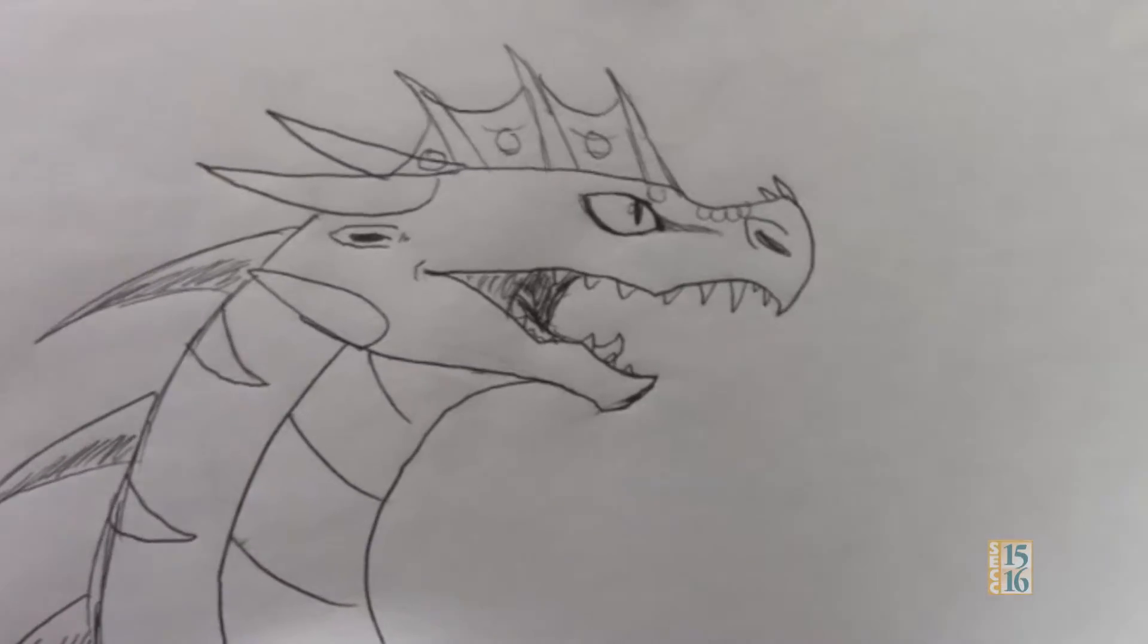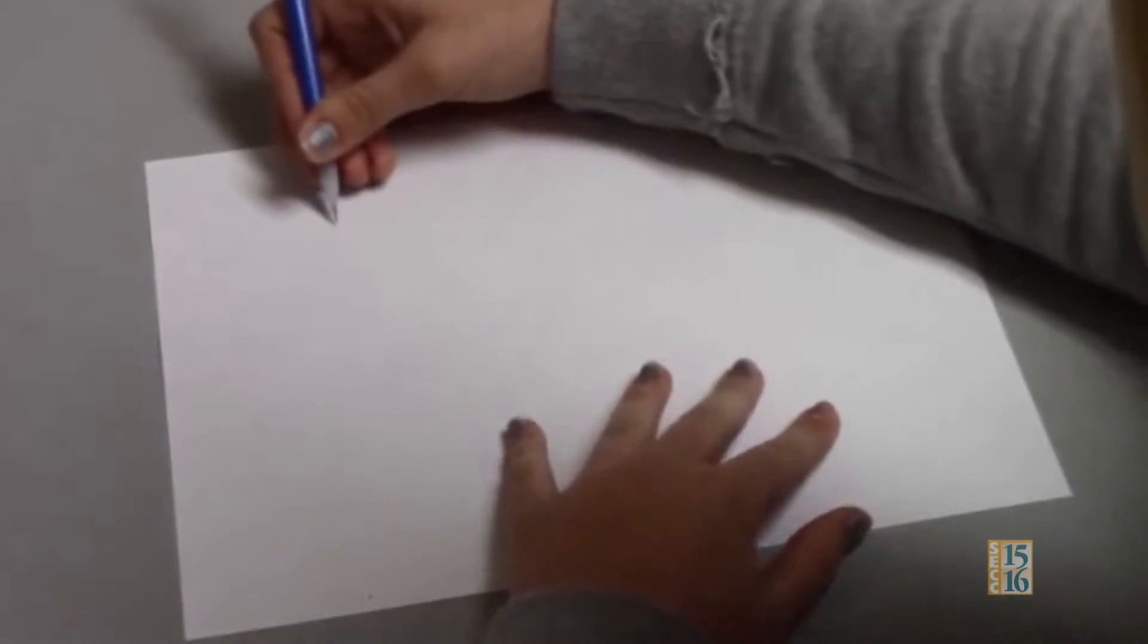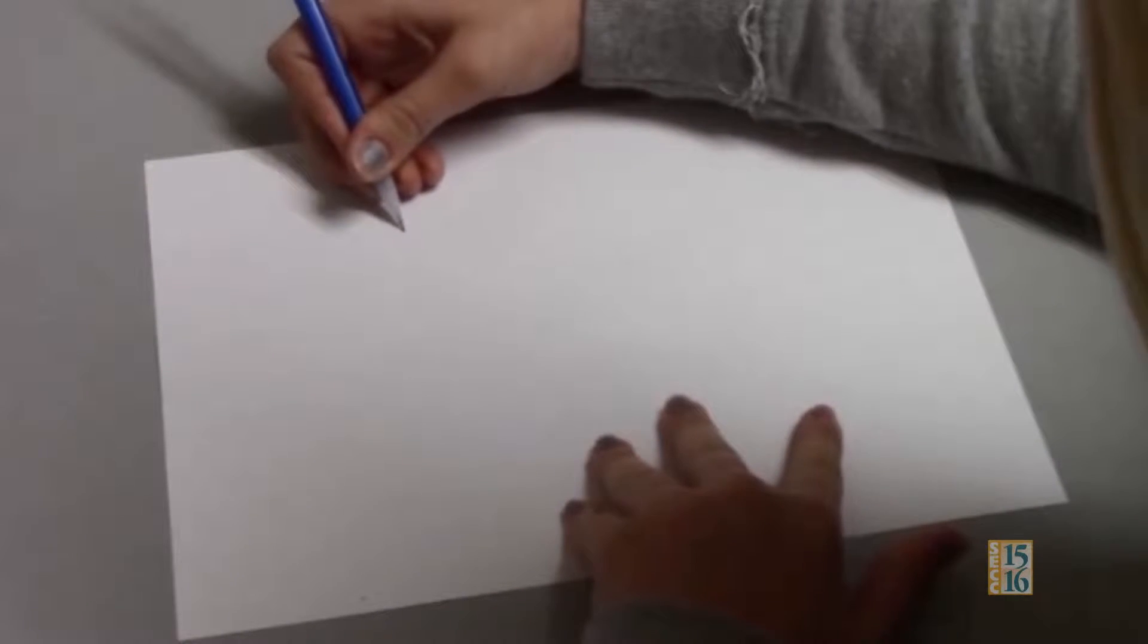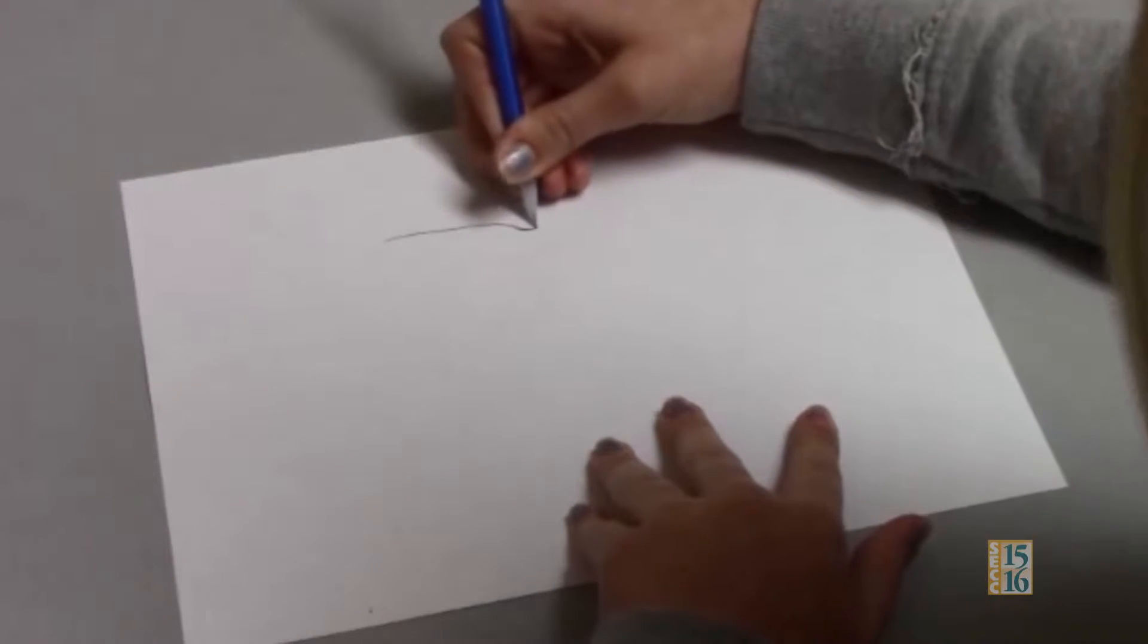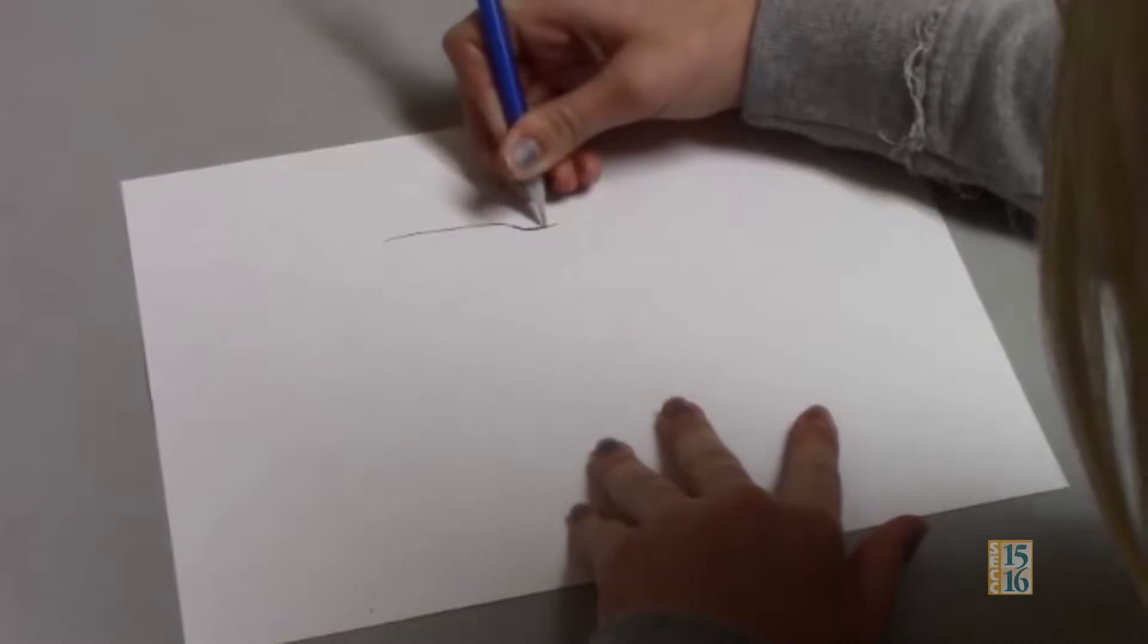I'm going to show you how to draw a dragon and it's going to look like this. First you start with the top of the head by going like this, and then do a curve down so that's where the nose starts.